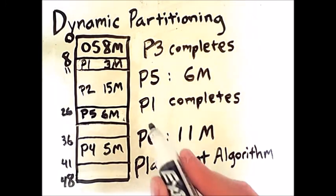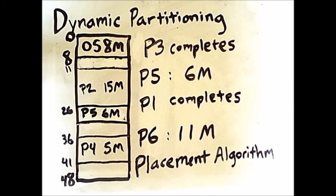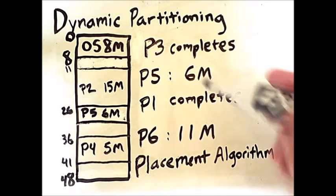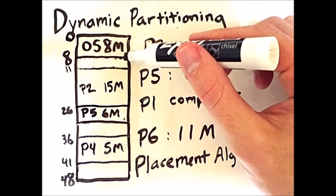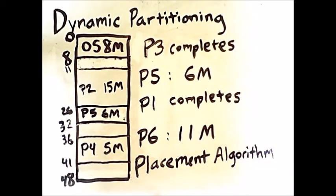Next, process 1 completes, which means we erase this spot from memory. Finally, process 6 arrives and requests 11 megabytes. But remember, these must be contiguous regions of memory, at least in this memory allocation scheme. So, we have 3 megabytes available here, 4 left here, and 7 left here. We do not have 11 contiguous megabytes of memory.